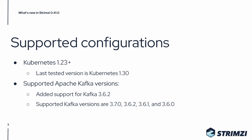In terms of Apache Kafka versions, Strimzi 0.41 newly supports Kafka 3.6.2. In addition to that, it keeps the support for Kafka 3.7.0, 3.6.1, and 3.6.0.